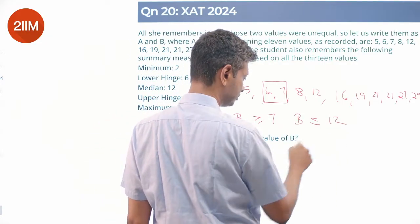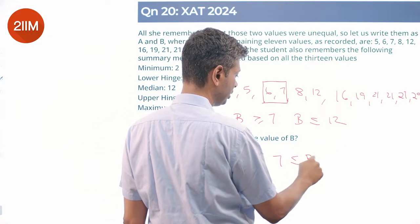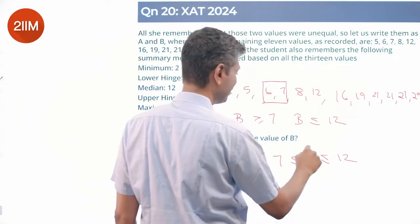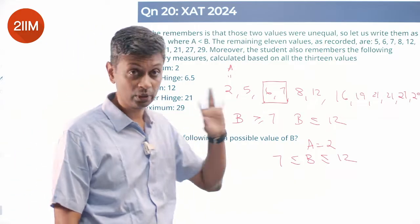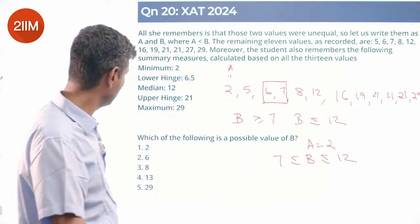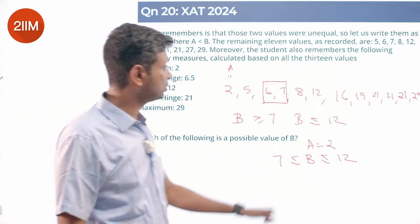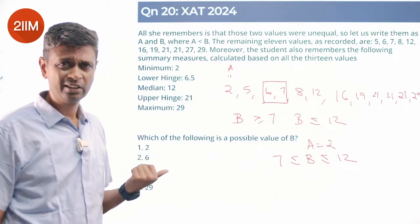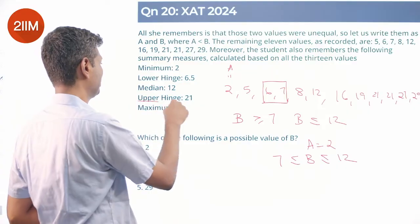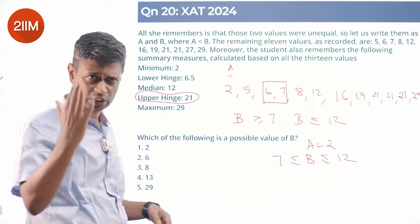7 less than or equal to B less than or equal to 12. We know A equals 2 and B sits between 7 and 12. Upper hinge is 21, yeah, 21 plus 21 by 2, that works. Maximum is 29. We don't even need this - the other four are sufficient. Which of the following is a possible value of B? 7 and 12. 8 sits in this range, this is my answer.